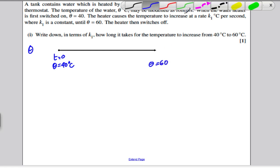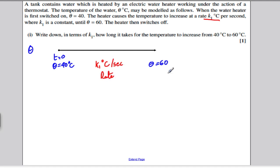It tells us that the rate of increase during that time is a constant rate of K1 degrees Celsius per second. So that's the rate of increase. And it asks us to work out, in terms of K1, the time, how long it takes for this increase from 40 to 60.